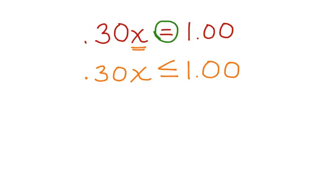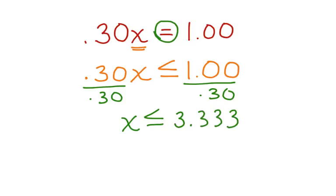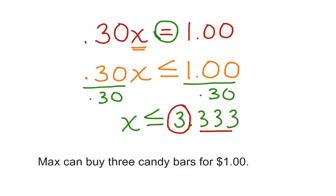Now let's divide both sides by $0.30. And we have x is less than or equal to $3.333 and it repeats. The 3 is the key number here. Even though Max will have a little bit of money left over, he can't buy more than 3 candy bars. Max can buy 3 candy bars for $1.